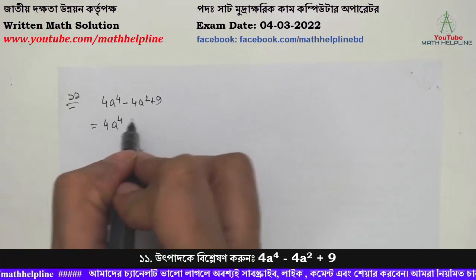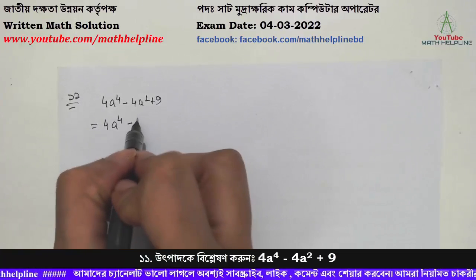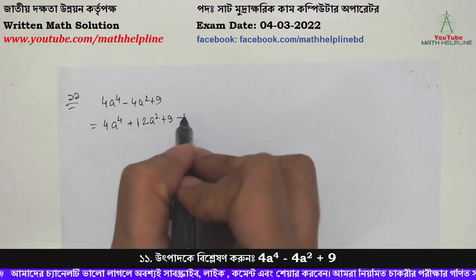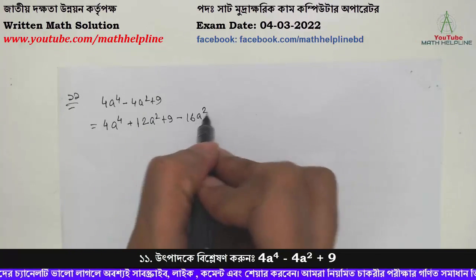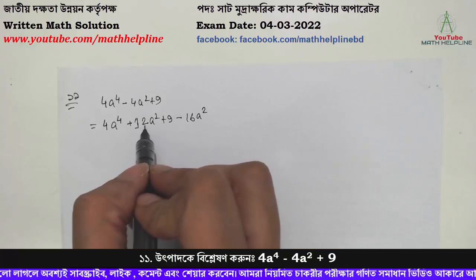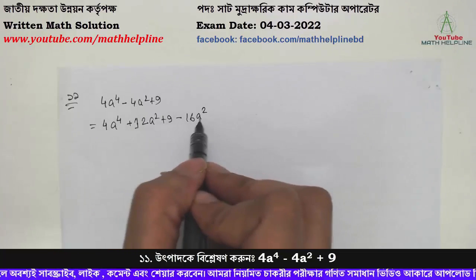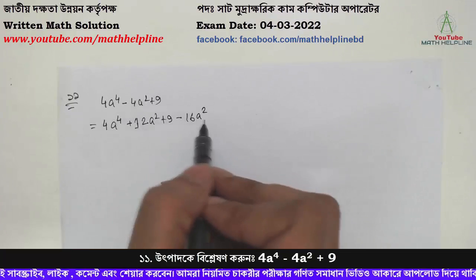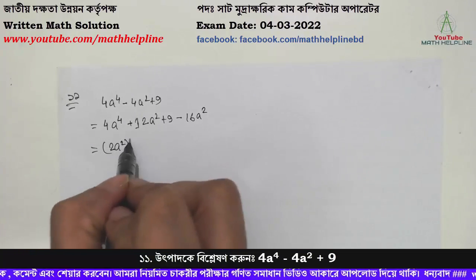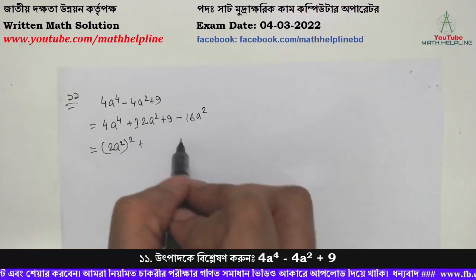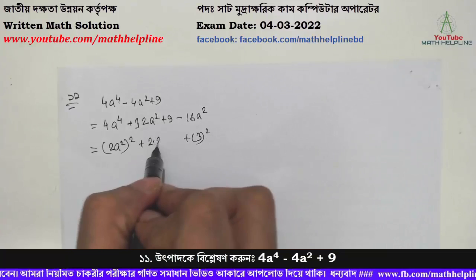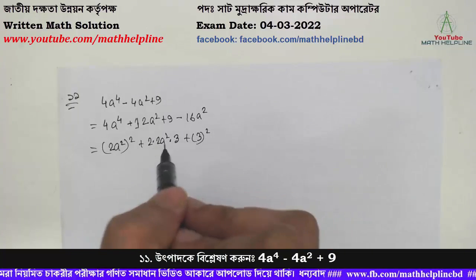So we have 4 minus 12 plus 9 minus 16 s square plus 12 s square, and we have minus 16 s square and minus 4 s square, so we have 2 s square whole square plus 3 square and then 2 into 2 s square into 3.